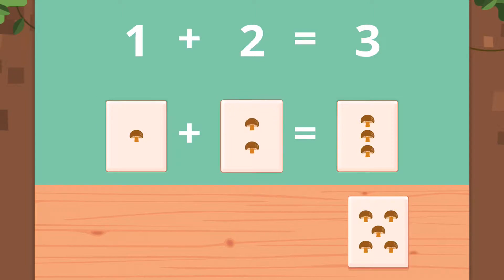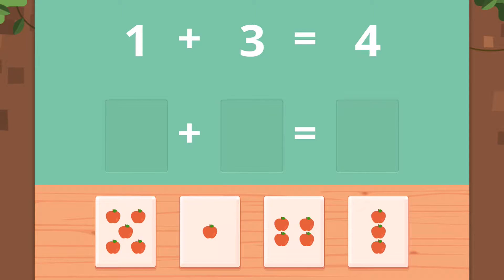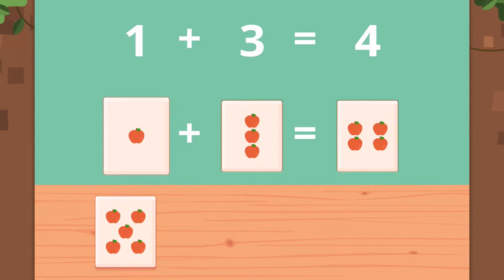One plus two equals three. Nice. Now here we have one plus three equals four. One, three, and four. One plus three equals four.